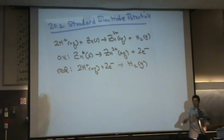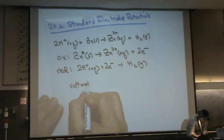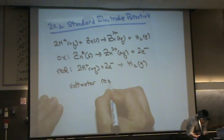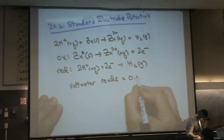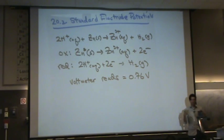And now we're going to put a voltmeter in this reaction. The voltmeter reads 0.76 volts. So we've got a voltmeter in our reaction. It reads that.